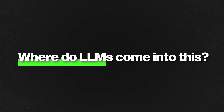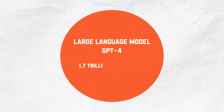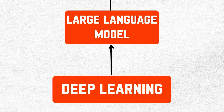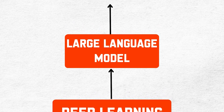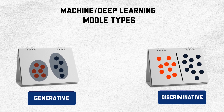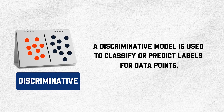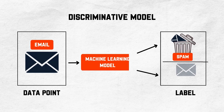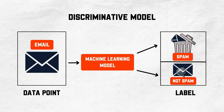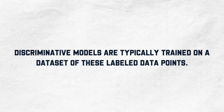So where do LLMs fit in? Large language models are also a type of deep learning model. These models are large both in terms of their physical size and the amount of data they've been trained on. Based on the type of outputs they generate, machine learning models can be divided into two types: generative and discriminative. A discriminative model is used to classify or predict labels for data points — for example, predicting whether an email is spam, where spam is the label and email is the data point.